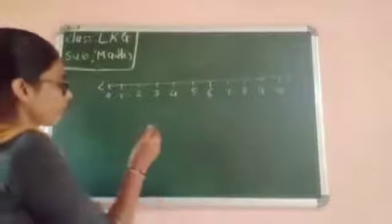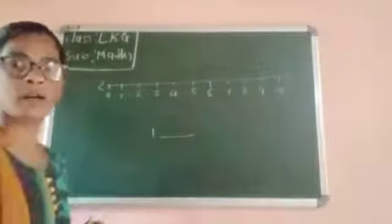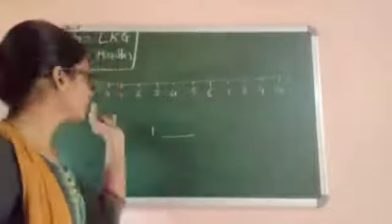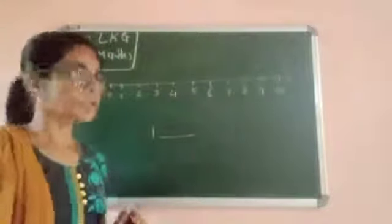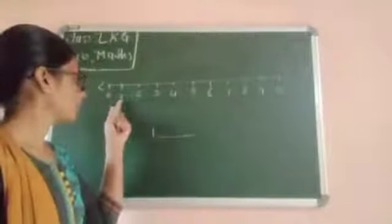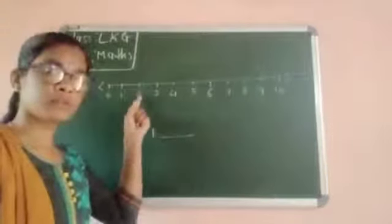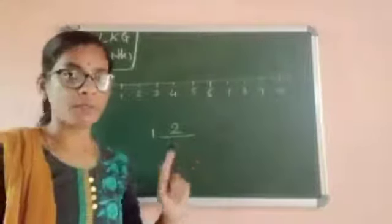I will give an example. This is one. One after what? You don't know. Look at the number line. Where is the one? Here is a one. One after what? Two. You write here: two. This is the after number.